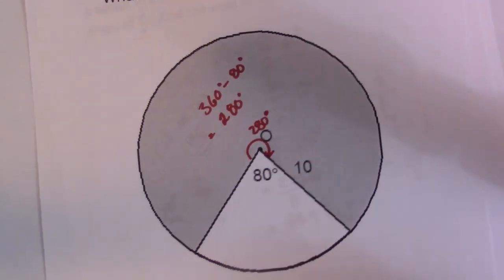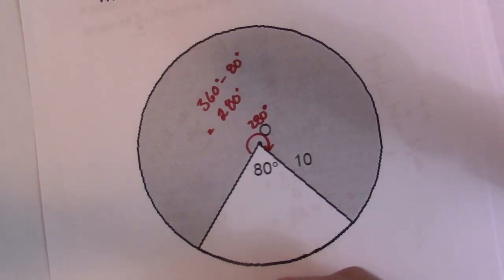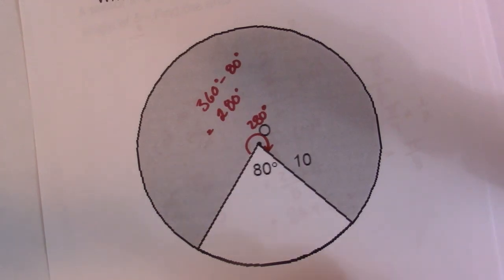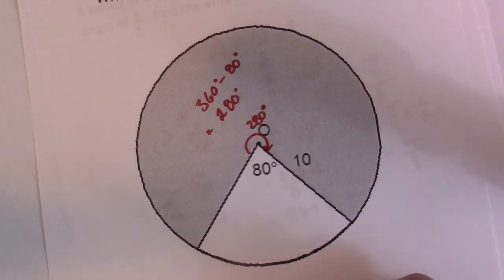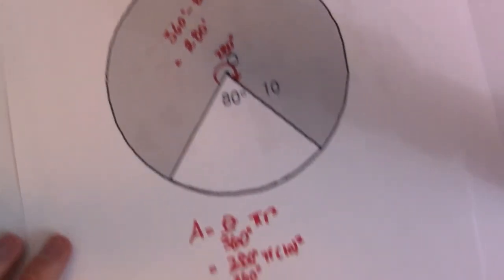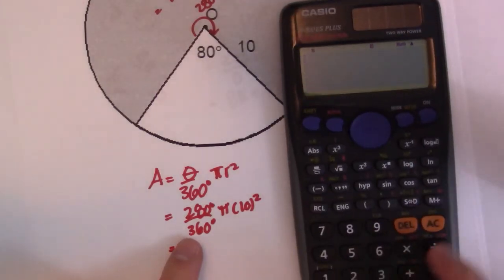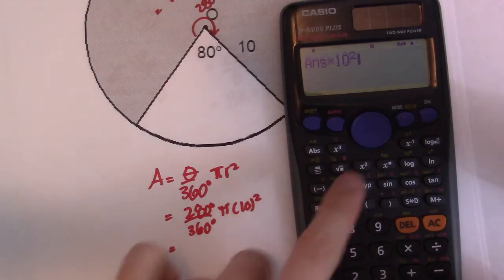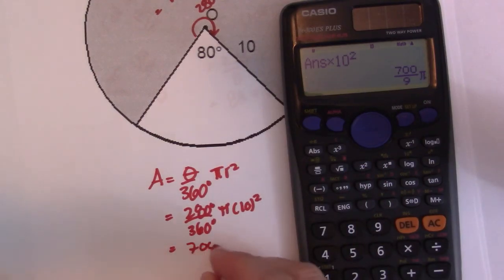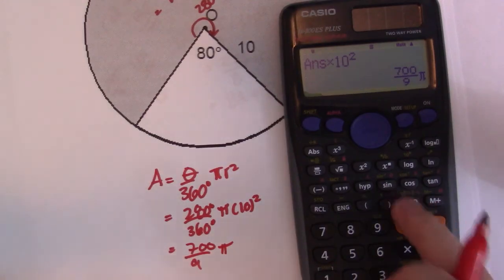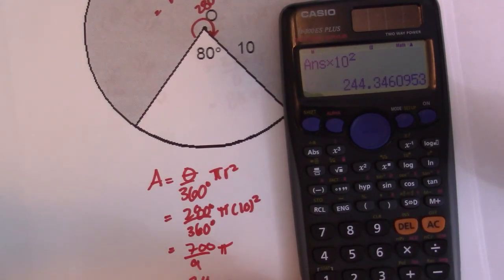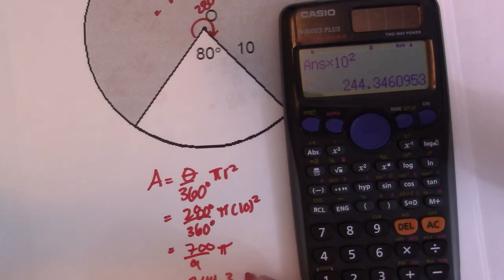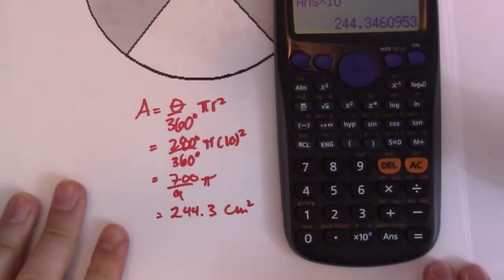That's probably the easiest way of doing it. Then I can take my formula out: theta 360 pi r squared. And then I get 280 divided by 360 pi 10 squared. Then I could just go ahead, plug her in again. 280 divided by 360 times pi times 10 squared. And I get 700 over 9 pi. And then I can just go 244.3 centimeters squared. And there it is, guys.